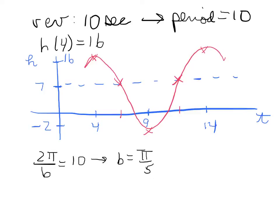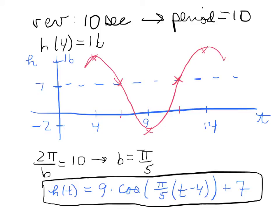So now we have it all. And I think I'll just squeeze it in right at the bottom here. So h of t, the height, is equal to 9, the amplitude, times the cosine function, pi over 5, that's b, times t minus 4, because we have a shift 4 to the right, plus 7. And that's our vertical shift. And there, my friends, is the equation that tells you how high that point on the paddle wheel is at any particular time t.